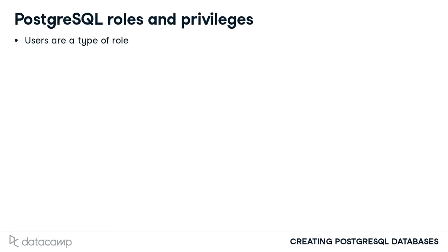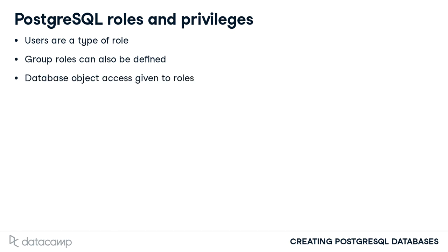The concept of a user account introduced previously is one type of role in PostgreSQL. Another type of role is a group, which can consist of one or more users. We will discuss groups later in this chapter. Access to different database objects are given to roles within the PostgreSQL database management system.